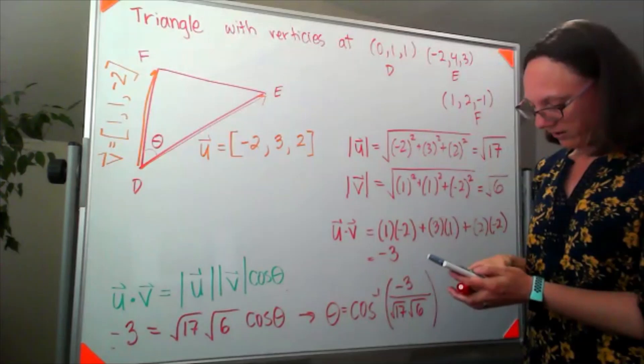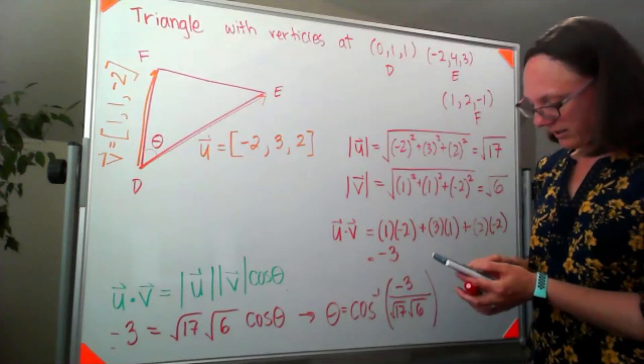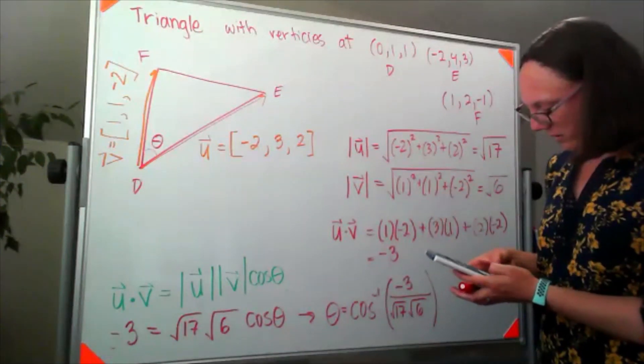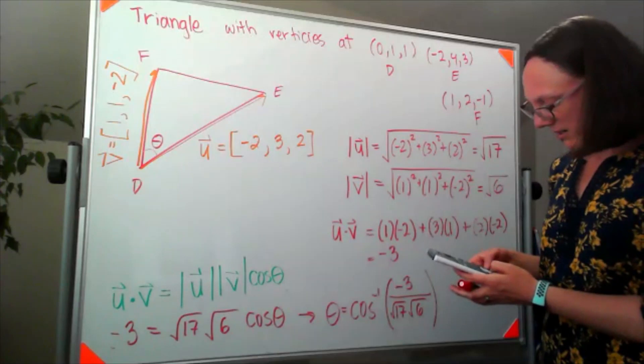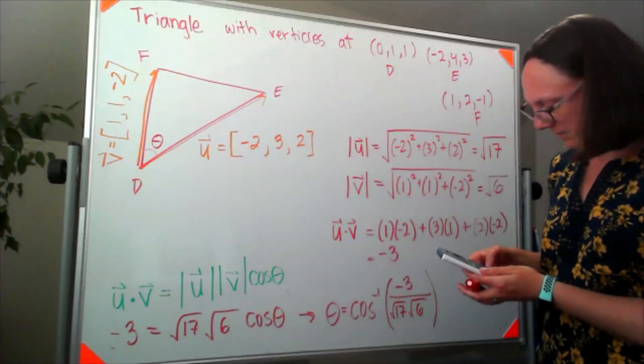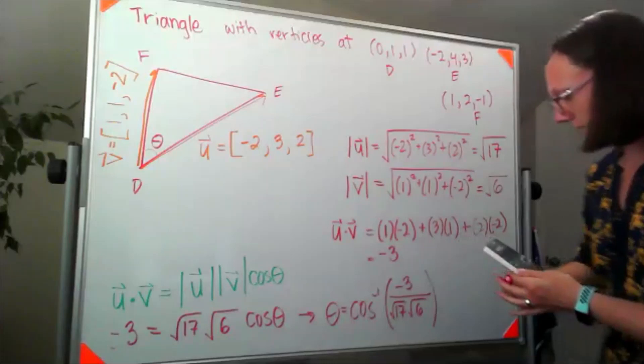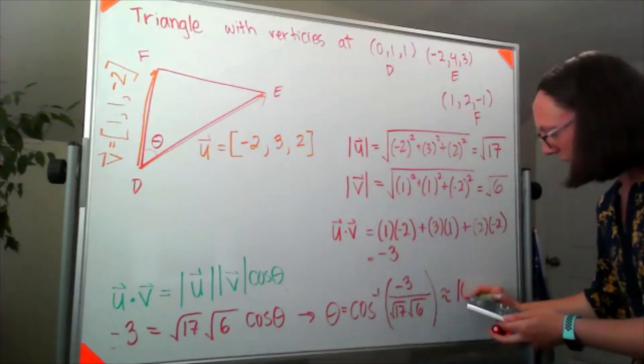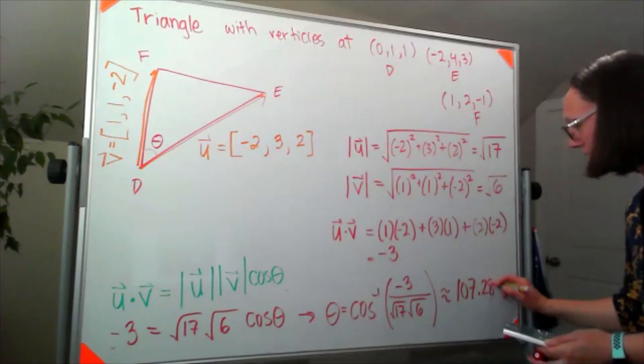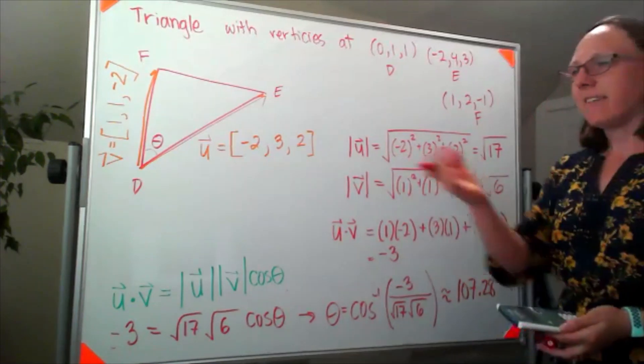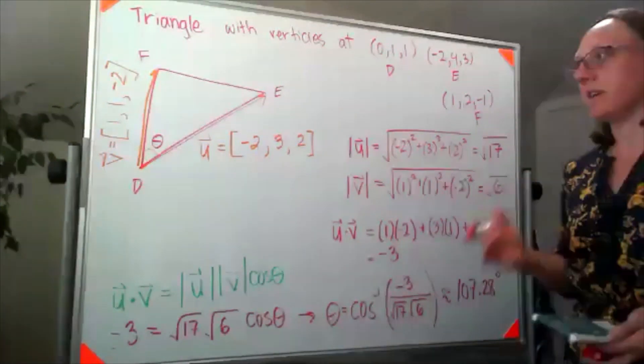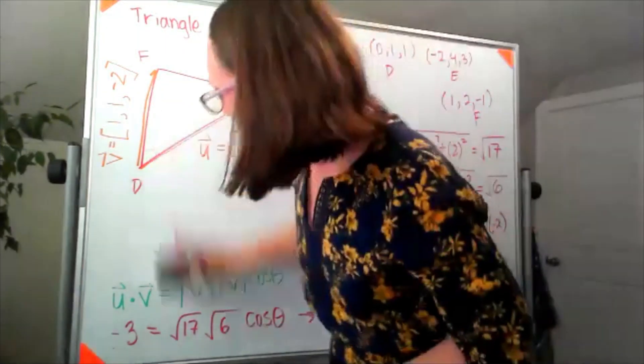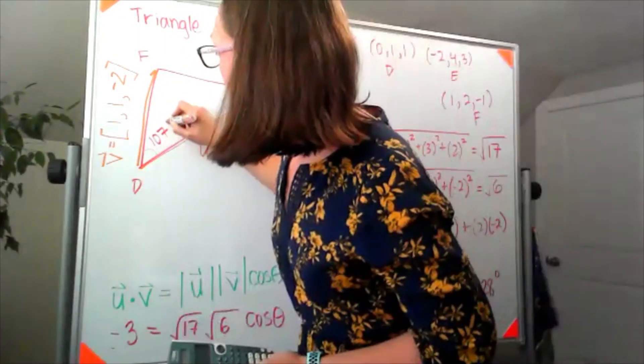So I've got my calculator in degree mode and I need inverse cosine of negative three divided by the square root of 17 times the square root of six. And my calculator gave me an angle of about 107.28 degrees. And then looking in the problem, it said to round to the nearest degree. So now if I round that to the nearest degree, I know this is 107 degrees.